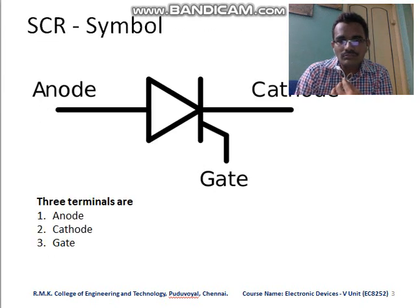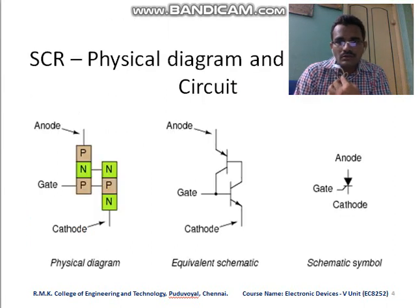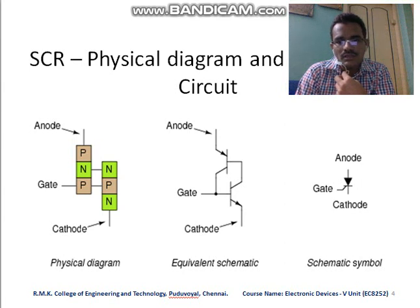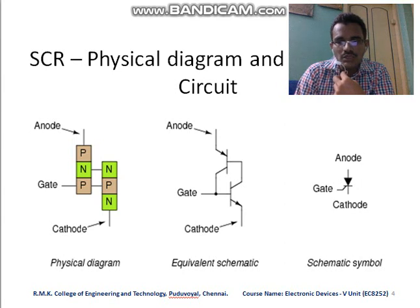This is the symbol of the Silicon Control Rectifier. It has three terminals: anode, cathode, and gate. Looking at its physical diagram and equivalent circuit, the physical structure is a PNPN arrangement, which can be represented as NPN and PNP transistors connected back to back. This is the structural figure and its symbolic view.